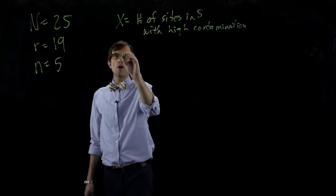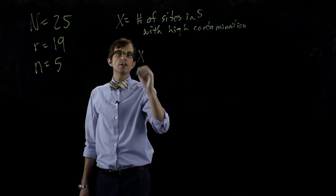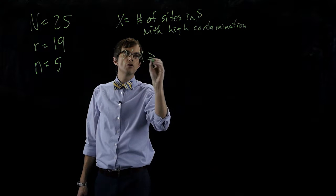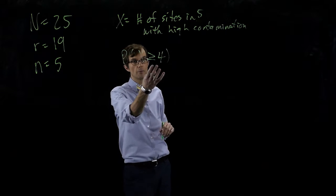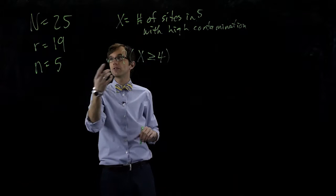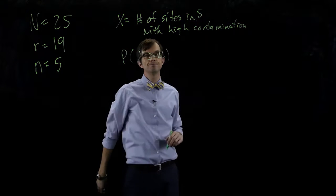And we want to know what's the probability that X is four or five. That is greater than or equal to four. Because the only number bigger than four that's possible is five.